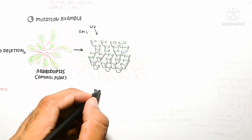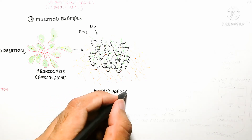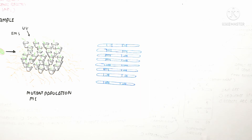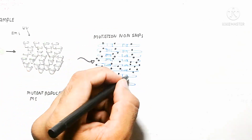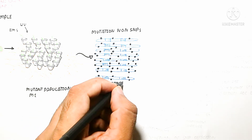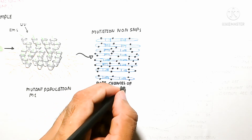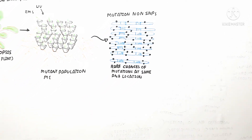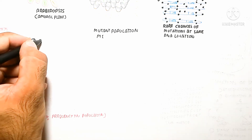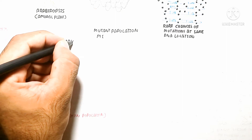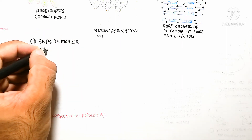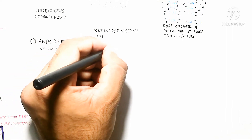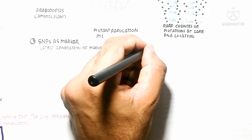Both harmful and harmless SNPs can exist. An important example is Arabidopsis, a plant with a mutant population containing many mutations. These are non-SNP mutations because they are not single nucleotide polymorphisms. The black color in the figure shows that different individuals have rare chances of mutation at the same DNA location. This means SNP occurs at the same location across individuals, while mutations occur at different genome locations.